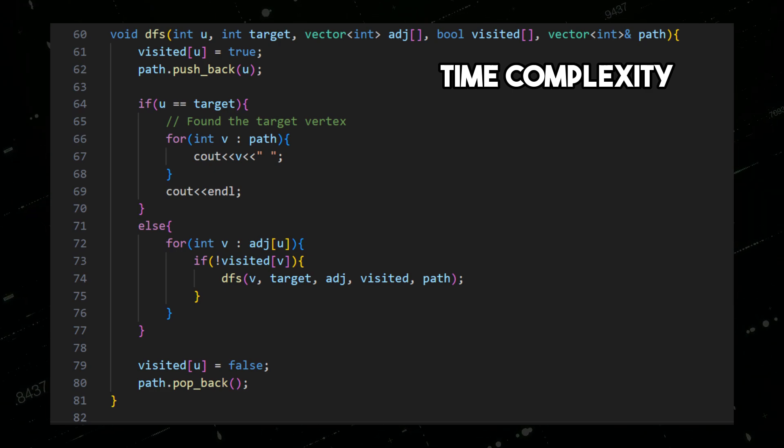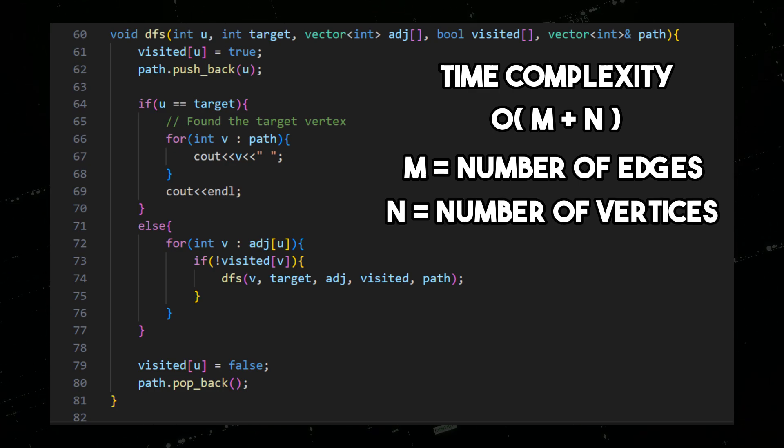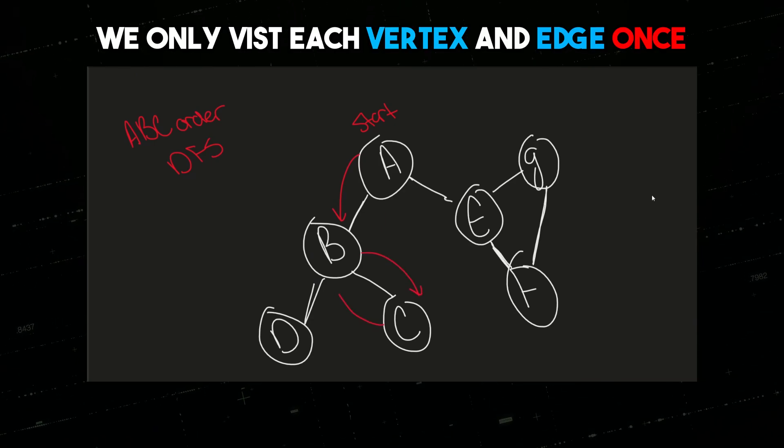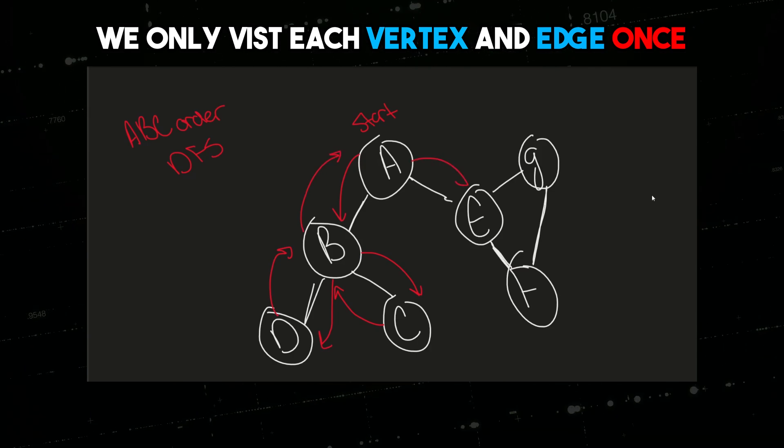The time complexity of the DFS algorithm is O of M plus N, where M is the number of edges and N is the number of vertices in the graph. This is because we visit each vertex and edge at most once. Although this approach works for small inputs, it may not be practical for larger inputs.